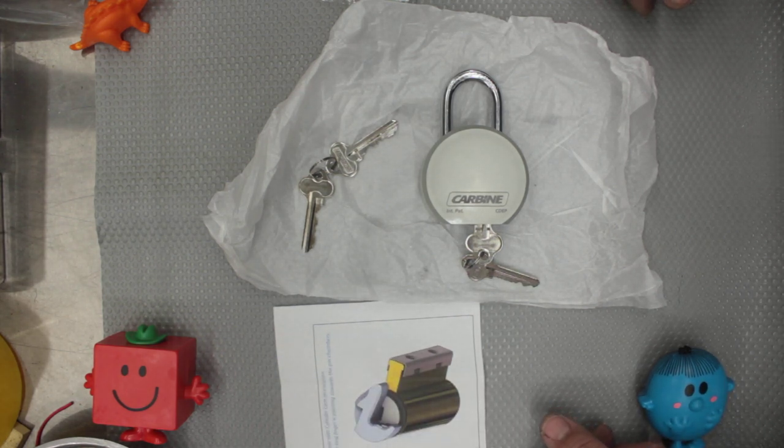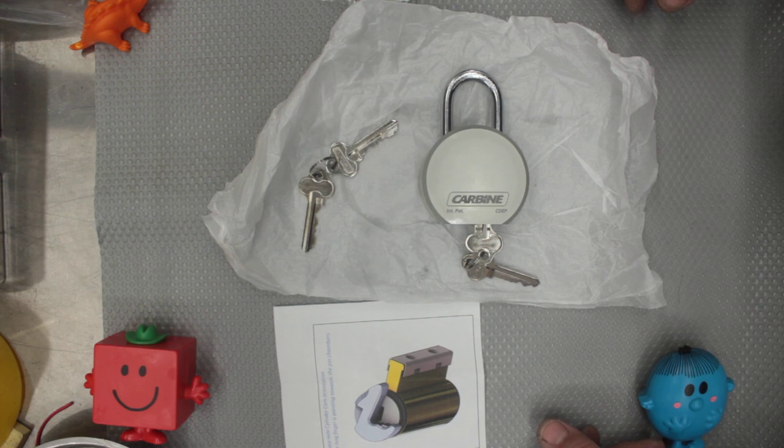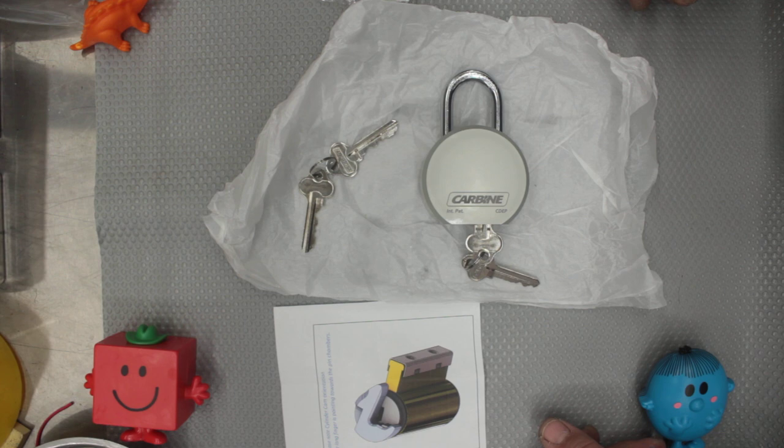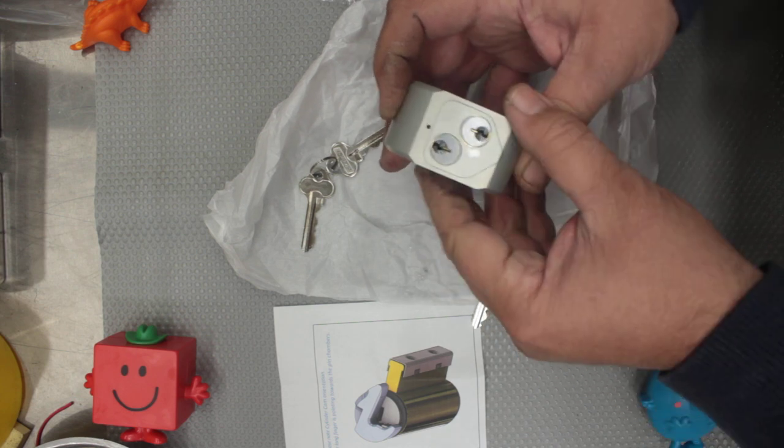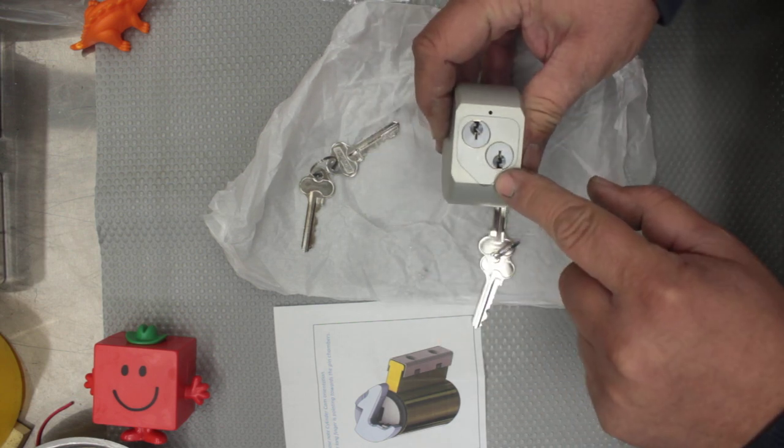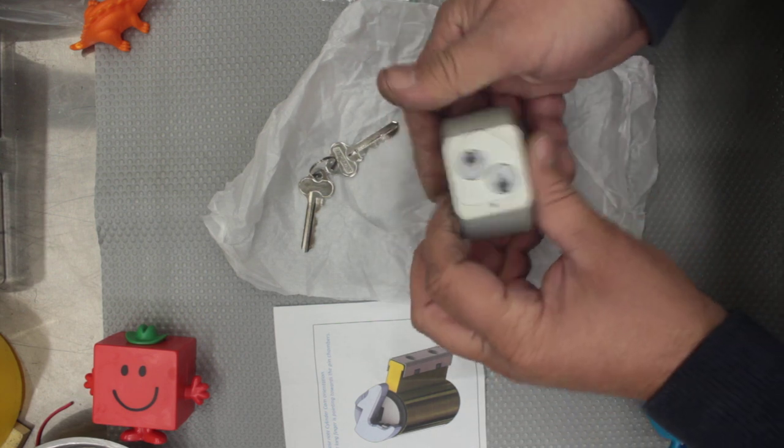That means you can put Abloy on it, you could put Multi High—you can't put Mul-T-Lock, Mul-T-Lock don't come in 530—you could put MT5 on one side, Abloy on the other side. You could have Carbo Quattro on one side, you could have BiLock on the other. You name it, you could have just about any key platform on this padlock because it's a 530. That's the whole idea of it—two different cylinders that can operate on the same lock housing.